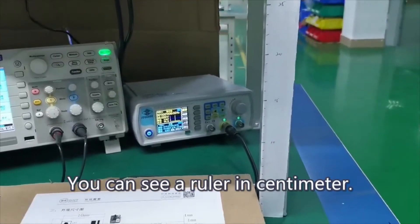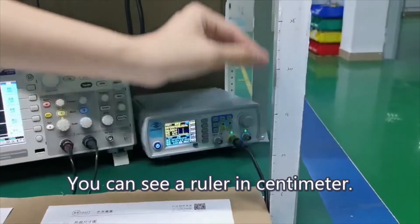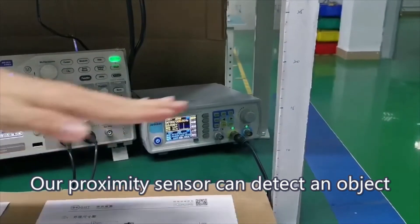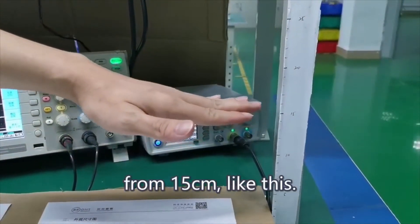You can see a ruler in centimeters. Our proximity sensor can detect an object from 15 cm or less.